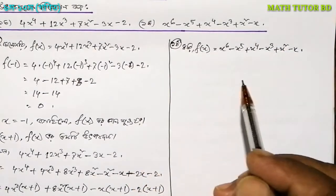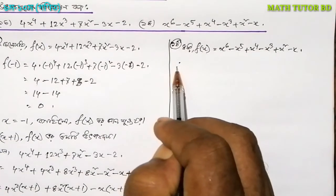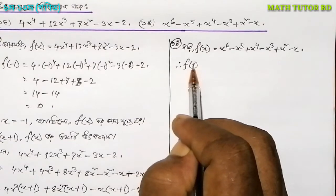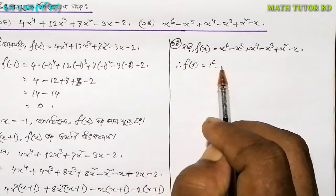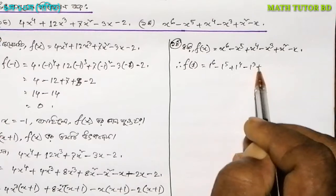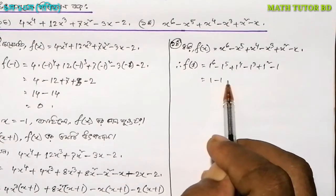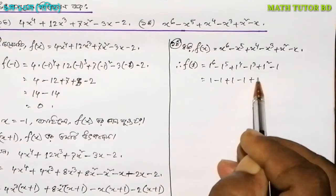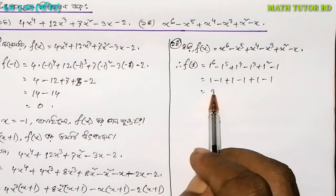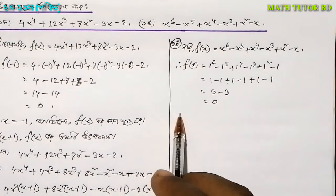We will put x equals 1 to check. Let's see: 1 to the power 6, minus 1 to the power 5, plus 1 to the power 4, minus 1 cubed, plus 1 squared, minus 1 plus 1 minus 1 plus 1 minus 1 plus 2 minus 3 — so the result is 0.